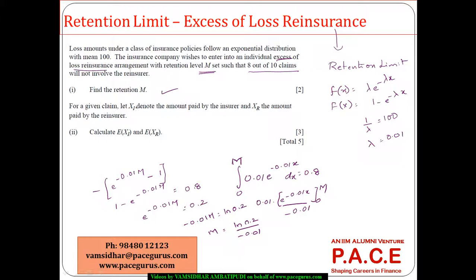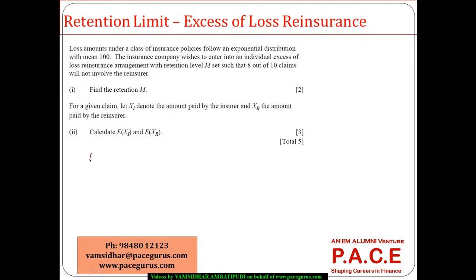For a given claim, let XI denote the amount paid by the insurer and XR the amount paid by the reinsurer. To calculate the expected value of XI there are two cases. First, if the claim amount is between 0 and M, the insurer pays exactly X, giving the integral from 0 to M of x · 0.01 · e^(−0.01x) dx.